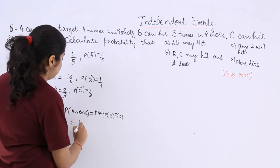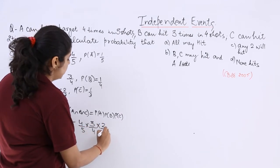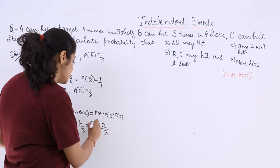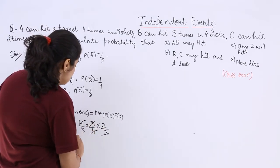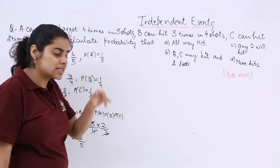So individual probabilities you can multiply. What is the probability of A? It is 4/5. What is the probability of B? It is 3/4. What is the probability of C? It is 2/3. Let's cancel. Whatever cancels. So the answer to this part is 2/5. The first part all may hit. Simple.